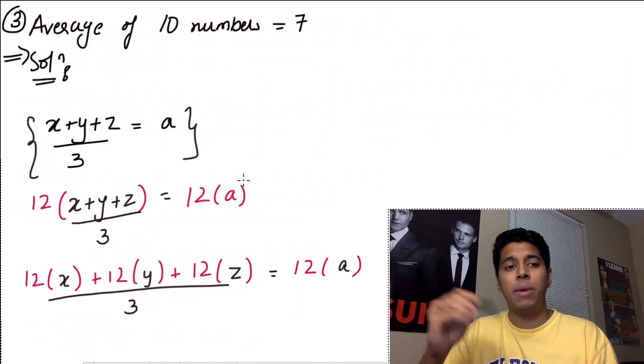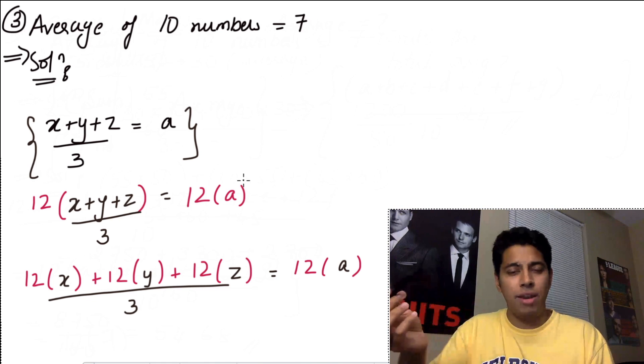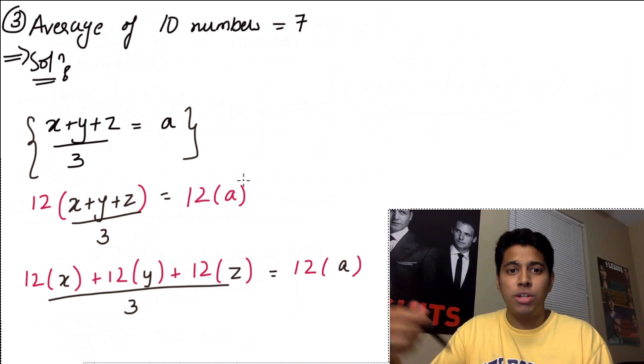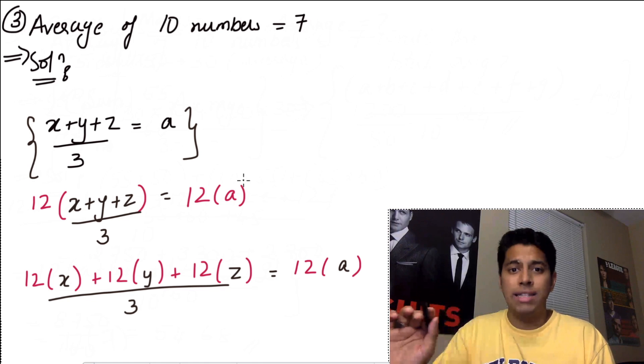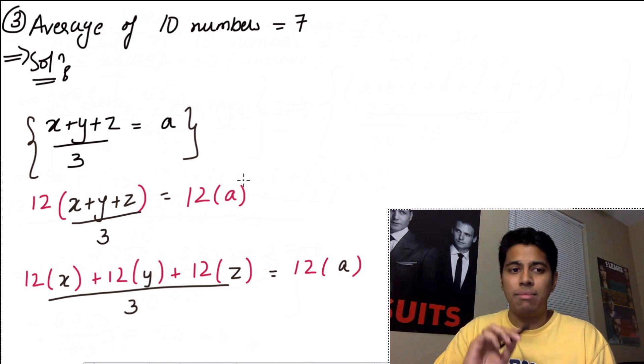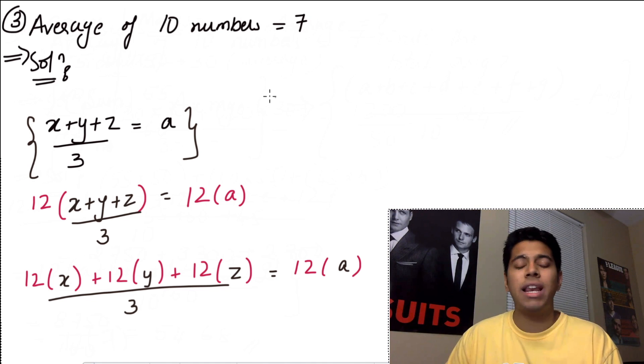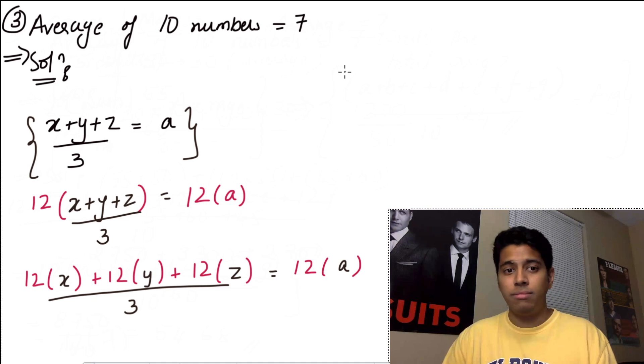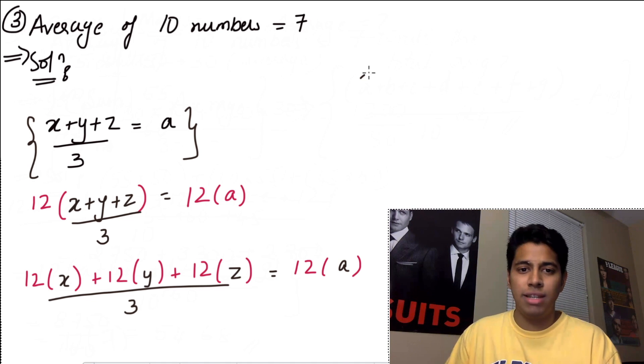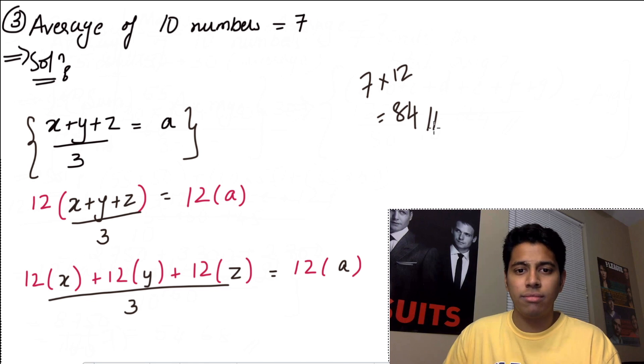So if in your problem there was suppose the average of 10 numbers is 7, and 5 of them are multiplied by 12, what is your new average? Then you can't say this. But for this sum now, you know that the average of 10 numbers is 7. All of them are multiplied by 12. Hence, what is your new average? Easy. 7 into 12. That is 84. And that's your answer.